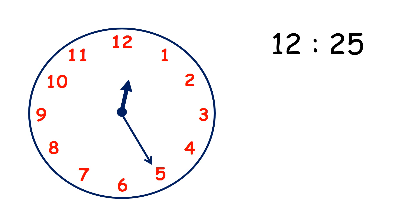Now with the minute hand on the 4 it's 12:20, 20 past 12. Now with the minute hand on the 5 it's 12:25. Now the minute hand is on the 6, so it's 12:30. How else can we say 12:30? We can say it's half past 12. And look at the hour hand — it's moved very slowly so it's now halfway between 12 and 1.